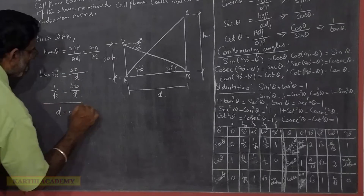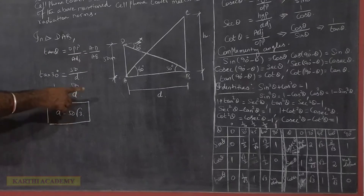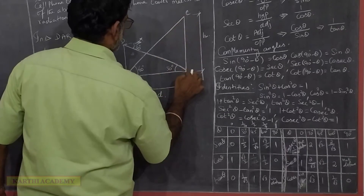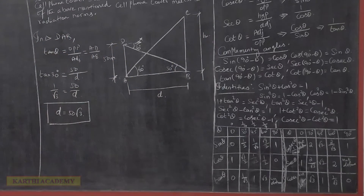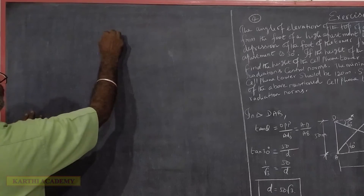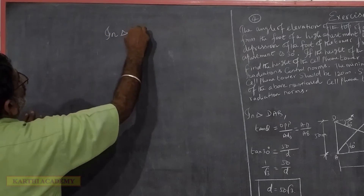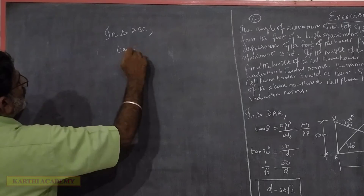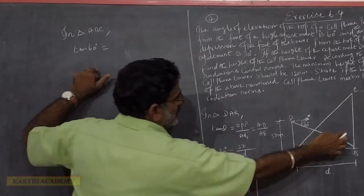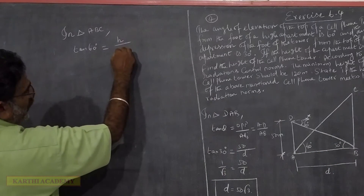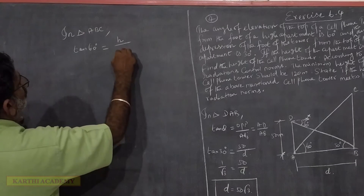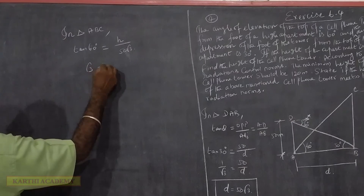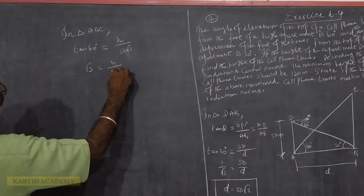Now we will work with triangle ABC. Tan(60°) equals opposite side divided by adjacent side, which is H divided by D. Since D equals 50√3, tan(60°) equals root 3. So H divided by D equals 50√3, meaning H divided by 50√3 equals root 3.